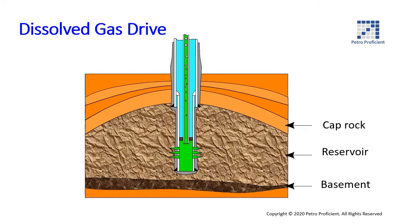In a dissolved gas drive reservoir, the oil contains dissolved gas. The drawdown or pressure drop caused by production causes the gas to escape from solution, thereby forcing fluid towards the well bore. In the vertical well bore section, further gas expansion lightens the hydrostatic column encouraging a greater drawdown.